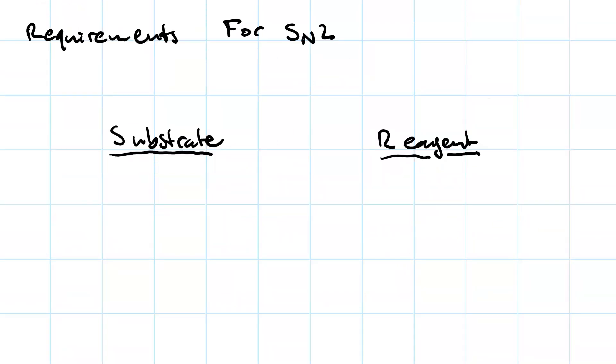There are some requirements to make SN2 happen. For one thing, the substrate should have a good leaving group. This is why alkyl halides are excellent candidates. The other requirement for the substrate is that it either be primary or secondary. It does not work with tertiary because of sterics. As far as the reagent goes, the reagent needs to be a strong nucleophile to get SN2.